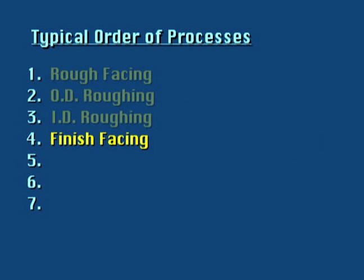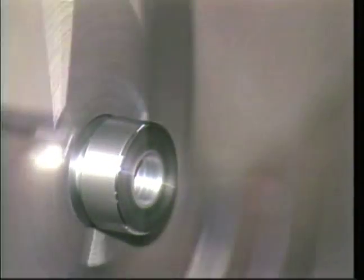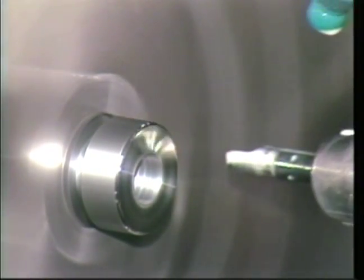The finishing processes can then begin. Often, the finish edge statement is programmed first. Next, OD finishing is performed. Finally, ID finishing is completed. By performing the ID finishing passes after the finish edge pass, any burrs created on the ID by face machining will be removed.